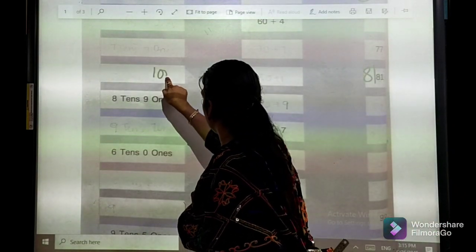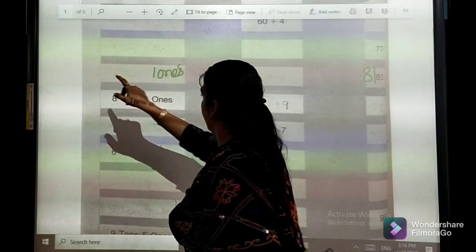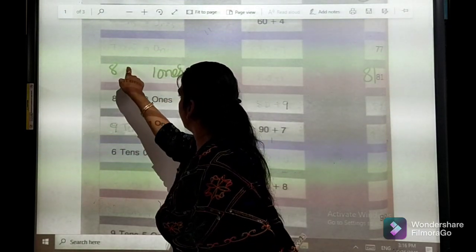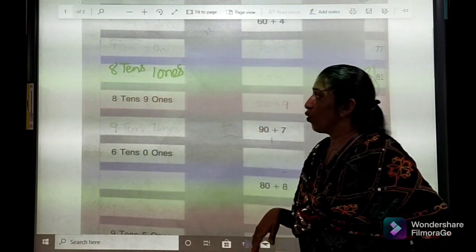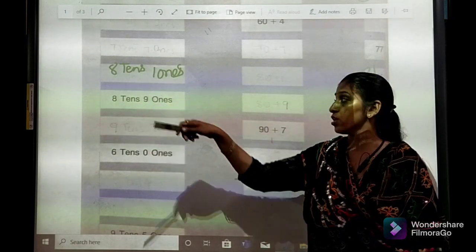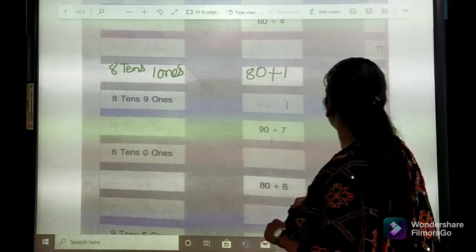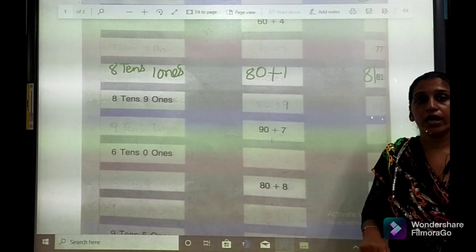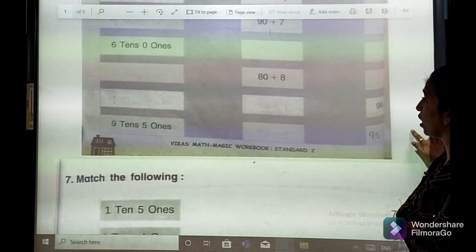1 is at the case of 1s. And 8 is at the case of 10s. Are you getting my words? 1 is at the case of 1s and 8 is at the case of 10s. So, 80 plus 1. This will become 81. So, rest of the other sums you will do in your classwork.